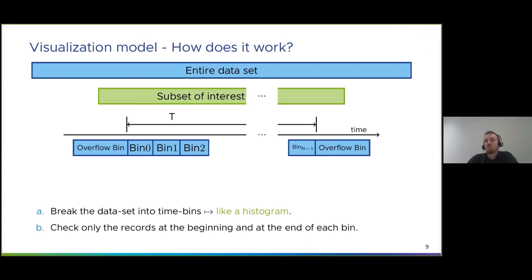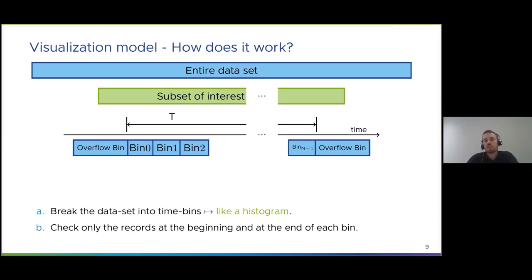We can print data to the screen, but other tools can do the same — that's not interesting. We want to visualize data, not just print to the terminal. Before trying to visualize something, we have to understand the way the visualization model used by KernelShark works. When we have a huge file containing many records and you're zooming and scrolling, at some point you visualize only a fraction of the tracing data — everything inside a time window T.